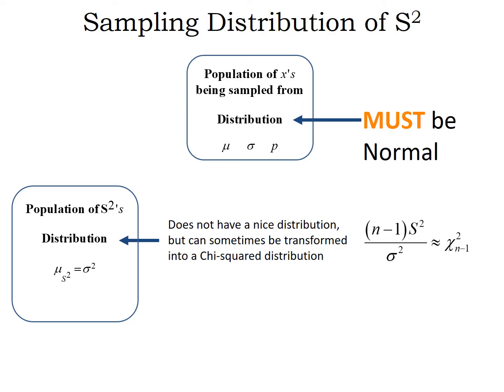So we don't know how s behaves, but if we modify s and s-squared by multiplying and dividing by the right combination, then the result behaves in a very predictable way. Any time we have a question about the distribution of s or s-squared — like what's the probability that the variance or the standard deviation of a sample does something — as long as the population is normally distributed, we're going to turn that into a question about a chi-squared distribution, and we know how to handle that.